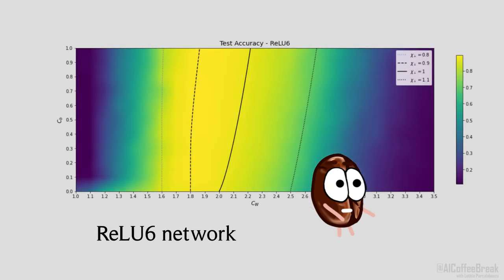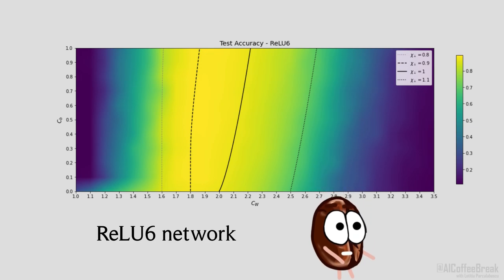ReLU6 is the same as ReLU, but values larger than 6 get squashed down to 6. This causes the lines to tilt to the right. This is also reflected in the accuracies that we find from the experiments, which again match up with the lines.